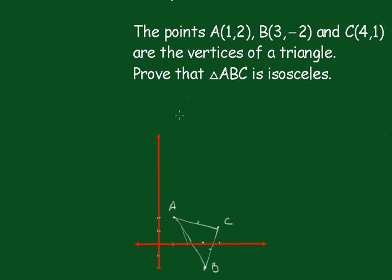Let's have a look at what AC is equal to. Using the distance formula, AC equals the square root of (4-1)² plus (1-2)², and that comes out to the square root of 10.